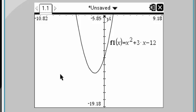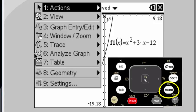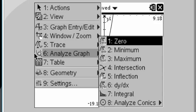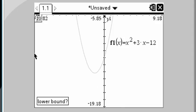Now to find the minimum of your parabola, press the menu key and we're going to choose analyze graph number 6. And here we go. We want to find the minimum.